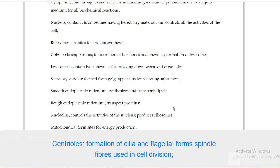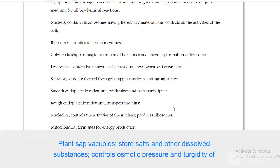Centrioles formation of cilia and flagella, forms spindle fibers used in cell division. Plant sap vacuoles store salts and other dissolved substances, controls osmotic pressure and turgidity of cells.